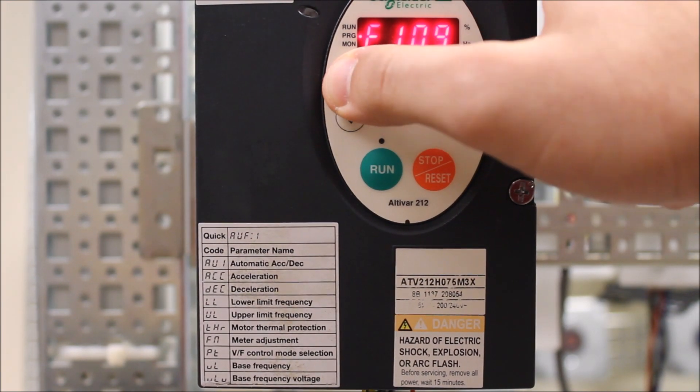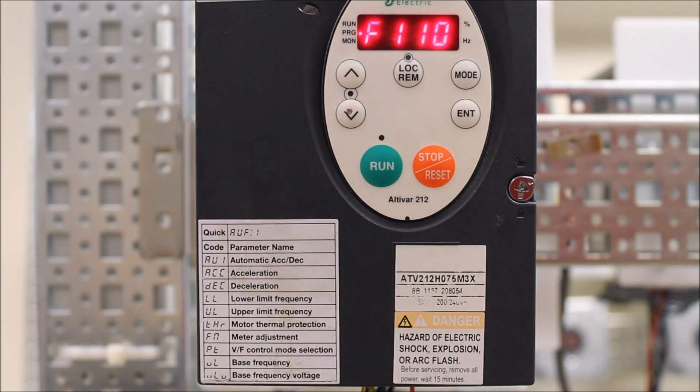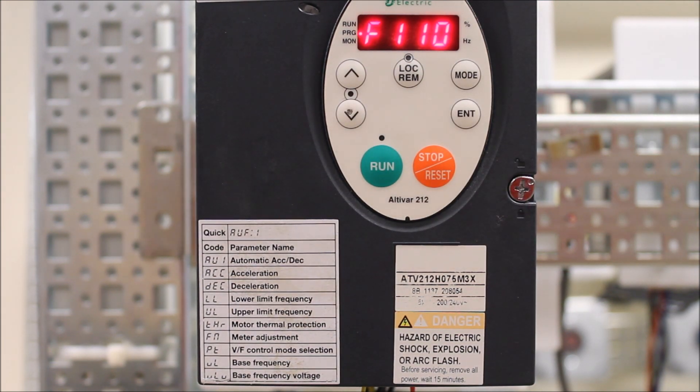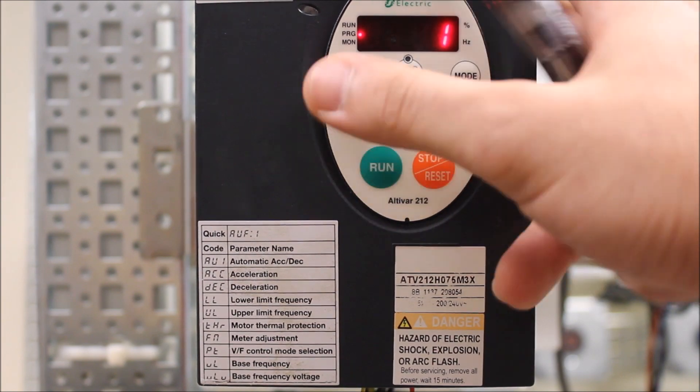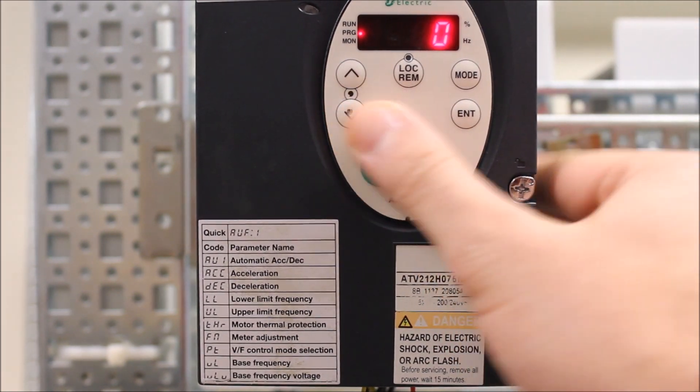And then go up to two parameters. The first one is F110. That's an active function. That has to be set to zero if you want to have a permissive function. So go ahead and make that zero.